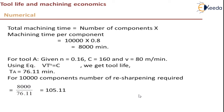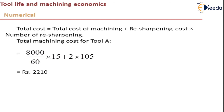Tool A has a tool life of 76.11 minutes, but the operation runs for 8,000 minutes total for 10,000 components. So the tool fails every 76.11 minutes, and the number of resharpenings required is 8000 / 76.11 = 105 times. The resharpening cost for Tool A is 2 rupees × 105 = 210 rupees.